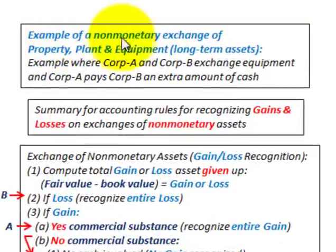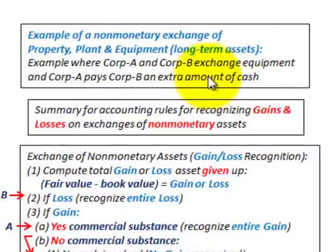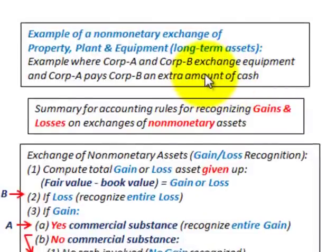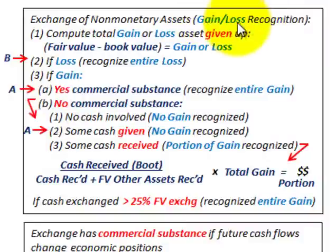What we're going to be going through here is an example of a non-monetary exchange of some property, plant, and equipment, or long-term assets. Our example is going to be where Corporation A and Corporation B exchange some equipment, and Corporation A is going to pay Corporation B some extra amount of cash in addition to the exchange of equipment. But before we get into that, there are rules that we follow here on these non-monetary exchanges to determine the gain or loss.